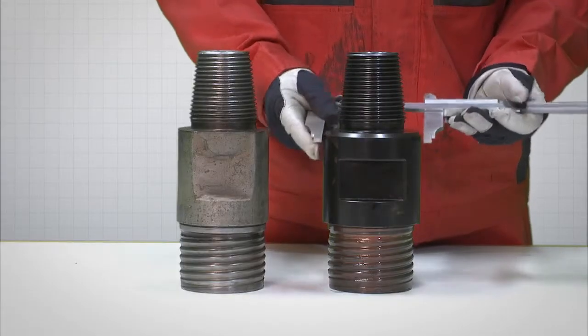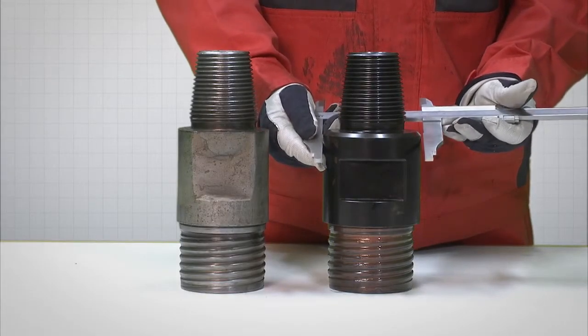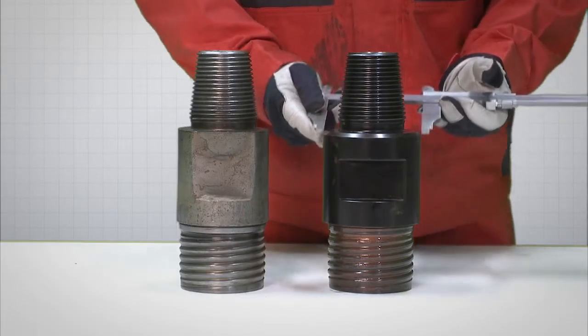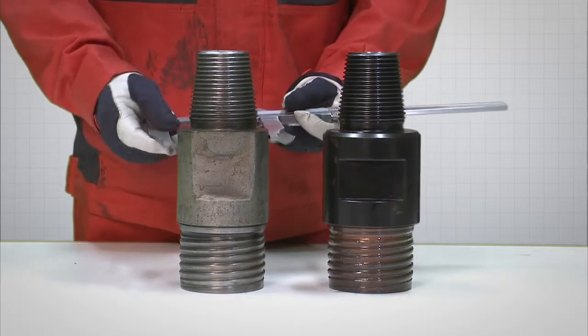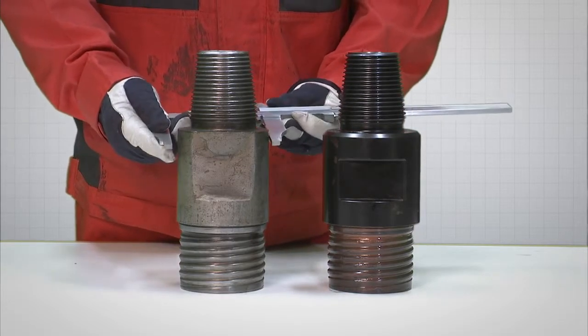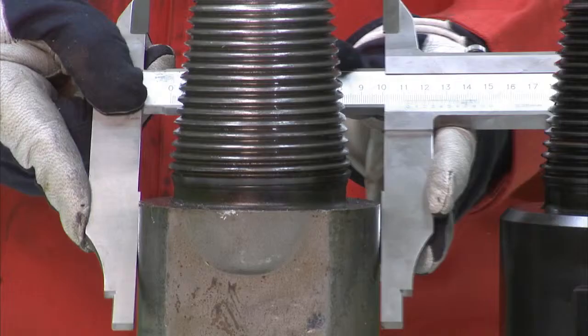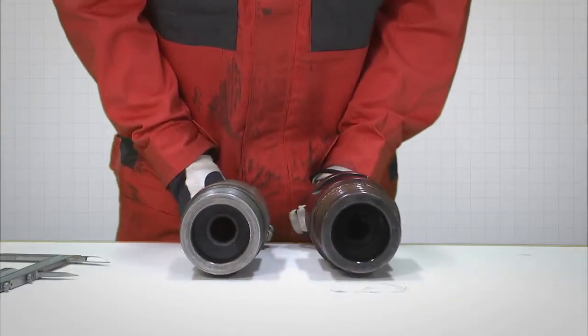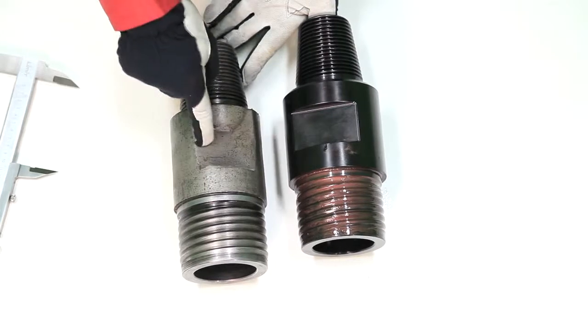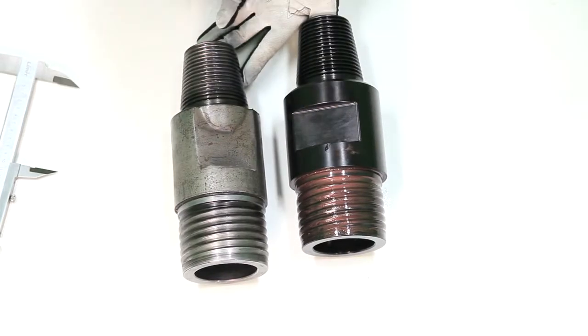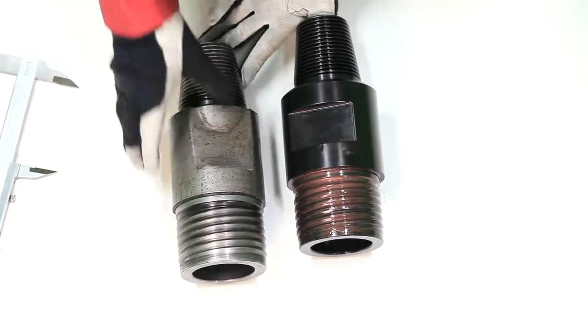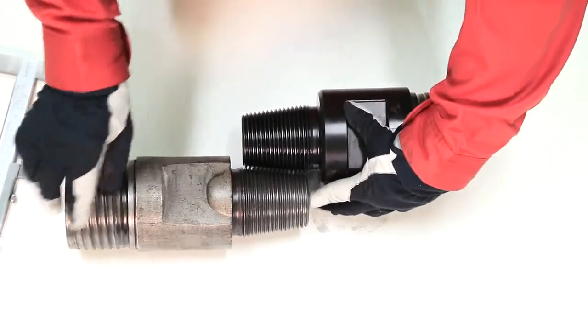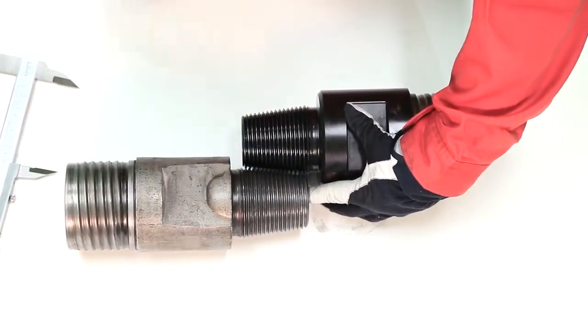Inspect the top sub. Discard it if the outside diameter of the top sub is below the specified wear limit, or if the wrench flat or shoulder is worn to the point where shouldering of the mating thread is not possible. Also discard it if the threads are damaged.